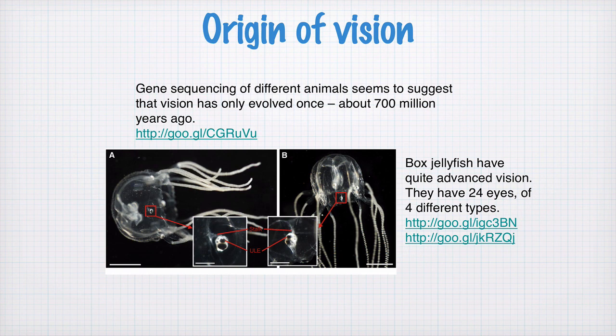They can also hunt their prey with other eyes that point into the water, following shadows and looking for fish to catch. They're scary, fascinating animals, and here's some images of their eyes. If you want to know more about box jellyfish vision, have a look at these links here.